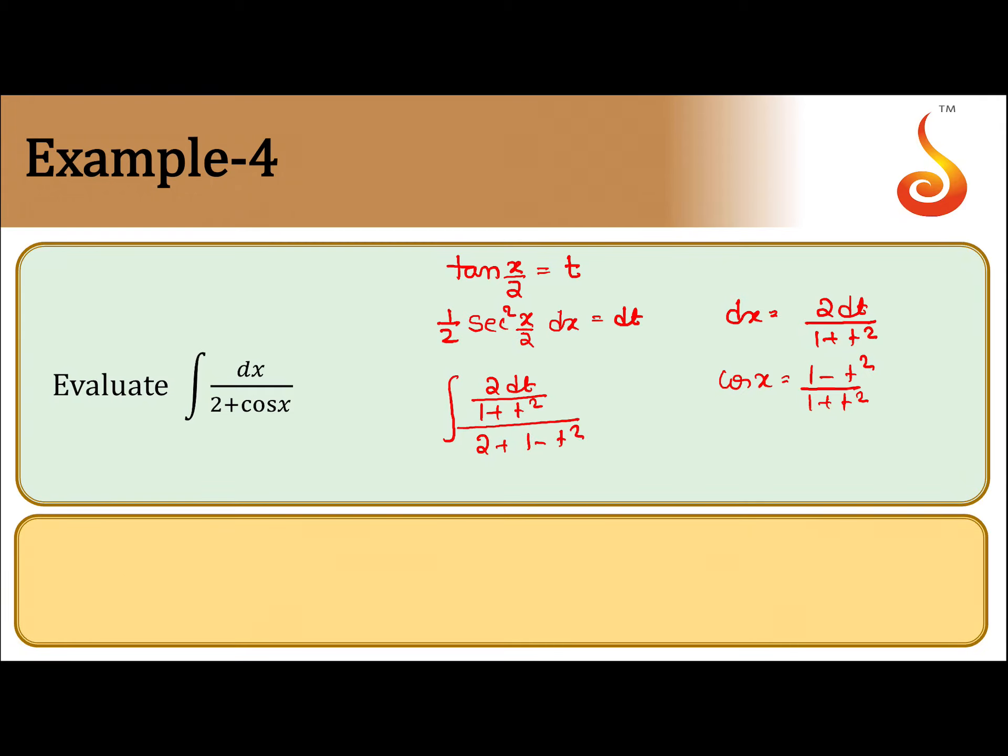Let us simplify it. We get integral 2 dt by 2 plus 2 t square plus 1 minus t square. So finally we get 2 dt by t square plus 3.